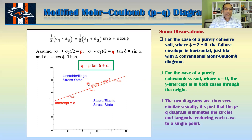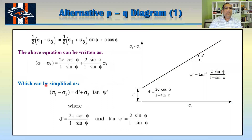p is sometimes called the average stress — (σ1 + σ3)/2 — and q is called half of the deviator stress — (σ1 − σ3)/2. In the next case, you can also modify the p-q diagram further, because we're going to use this p-q diagram for one of our solutions in stability analysis.